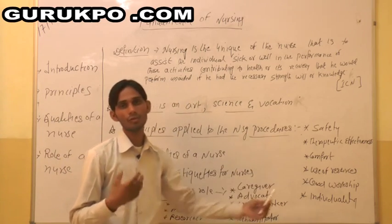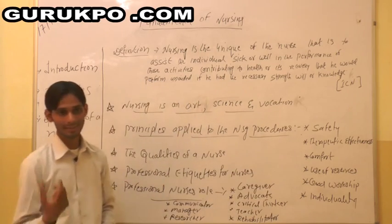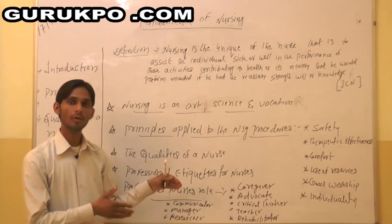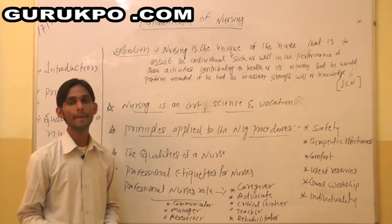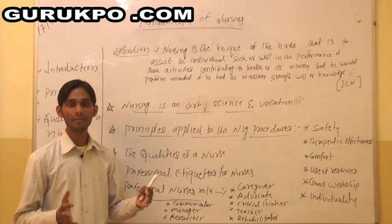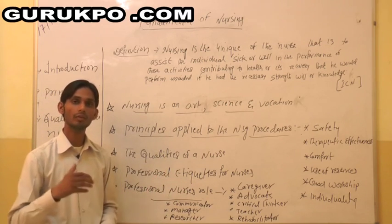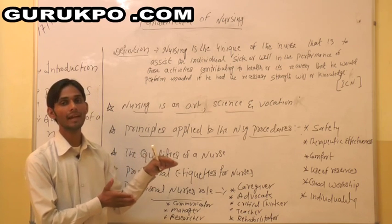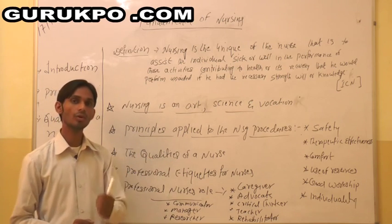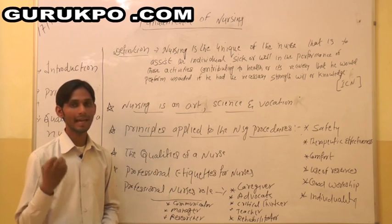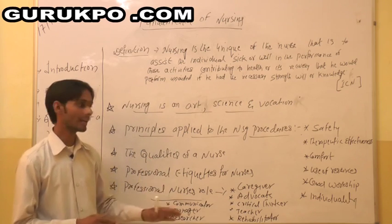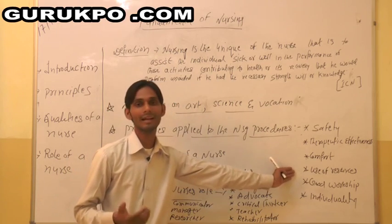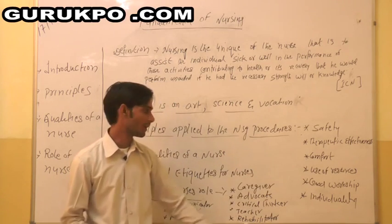Next, use of resources — what are all the resources available in the hospital, such as time, money, and material — everything we have to manage. We have to work according to saving time, energy, and material. We should not waste anything, because time is precious for the client. Without wasting time and money, we have to assist the client as soon as possible.